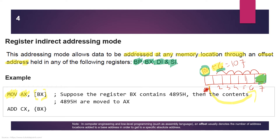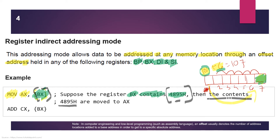So in 'MOV AX, [BX]', the BX register contains an address. Because BX is in square brackets, we are talking about the contents at that particular address — whatever data is stored at that memory address gets moved into the AX register. This is register indirect addressing mode, where we use the offset value to reach a particular memory location through a base address plus offset.